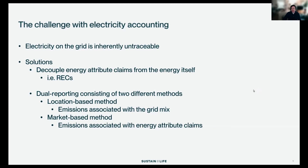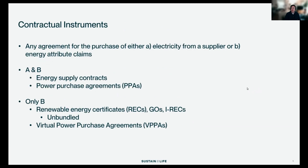How do you get these energy attribute claims? You get them through contractual instruments — an agreement to either purchase electricity from a supplier or purchase the underlying attribute claims. There are two categories. The first category covers instruments where you're buying both electricity and the attribute claims at the same time, such as buying renewable electricity from a generator within your utility area. This type is only available to those in deregulated markets where you can choose your energy supplier.